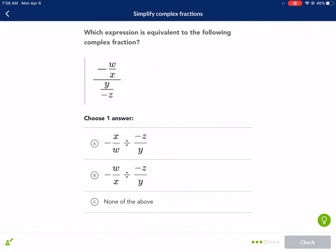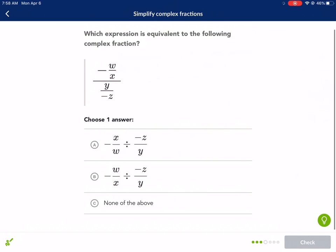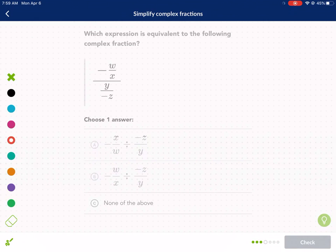Let's just do one more, see if this will help you out. Which expression is equivalent to the following complex fraction? We have negative w over x divided by y over negative z. So we need to have the w over x needs to be the same. You're not flipping the w over x. Let me just go ahead and rewrite it for you. Negative w over x. Now whenever I have a negative out in front, I like to put it in the top. It makes it a lot easier to multiply, divide, add, everything.